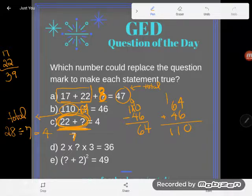Well, how can I get from 22, add something to get to 28? Well, let's see. 22, 23, 24, 25, 26, 27, 28. I'd have to add 6 here.